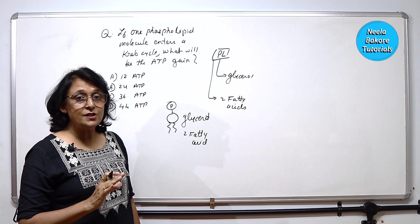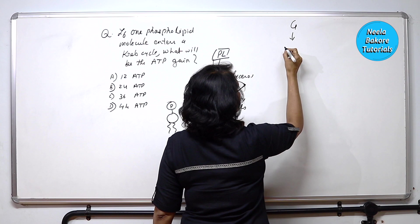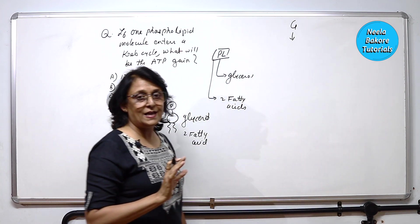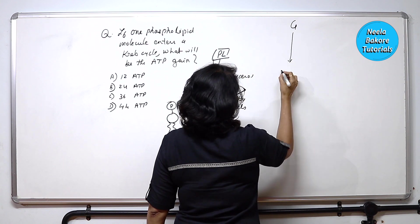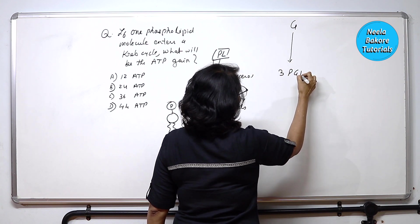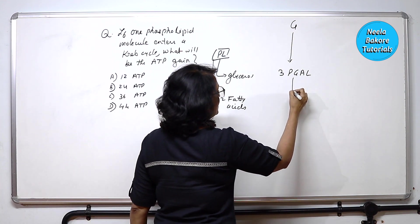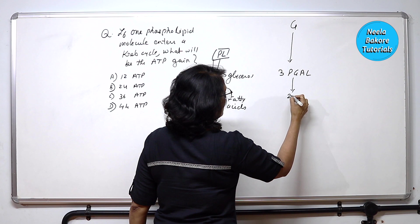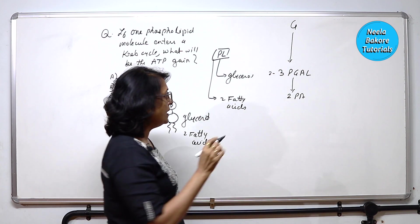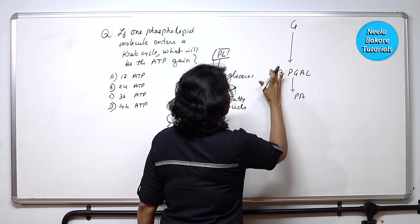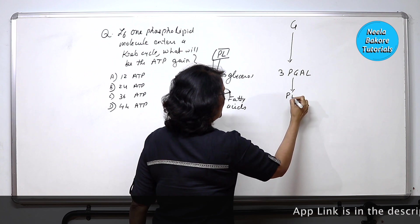When it enters, then what happens? If you remember, glucose is broken down into pyruvic acid. But we will write down one step that is 3-phosphoglyceraldehyde, 3-PGAL. Then this 3-PGAL is going to give us pyruvic acids, two molecules of this. This is from one glucose. So to avoid confusion, let us write down just one pyruvic acid.